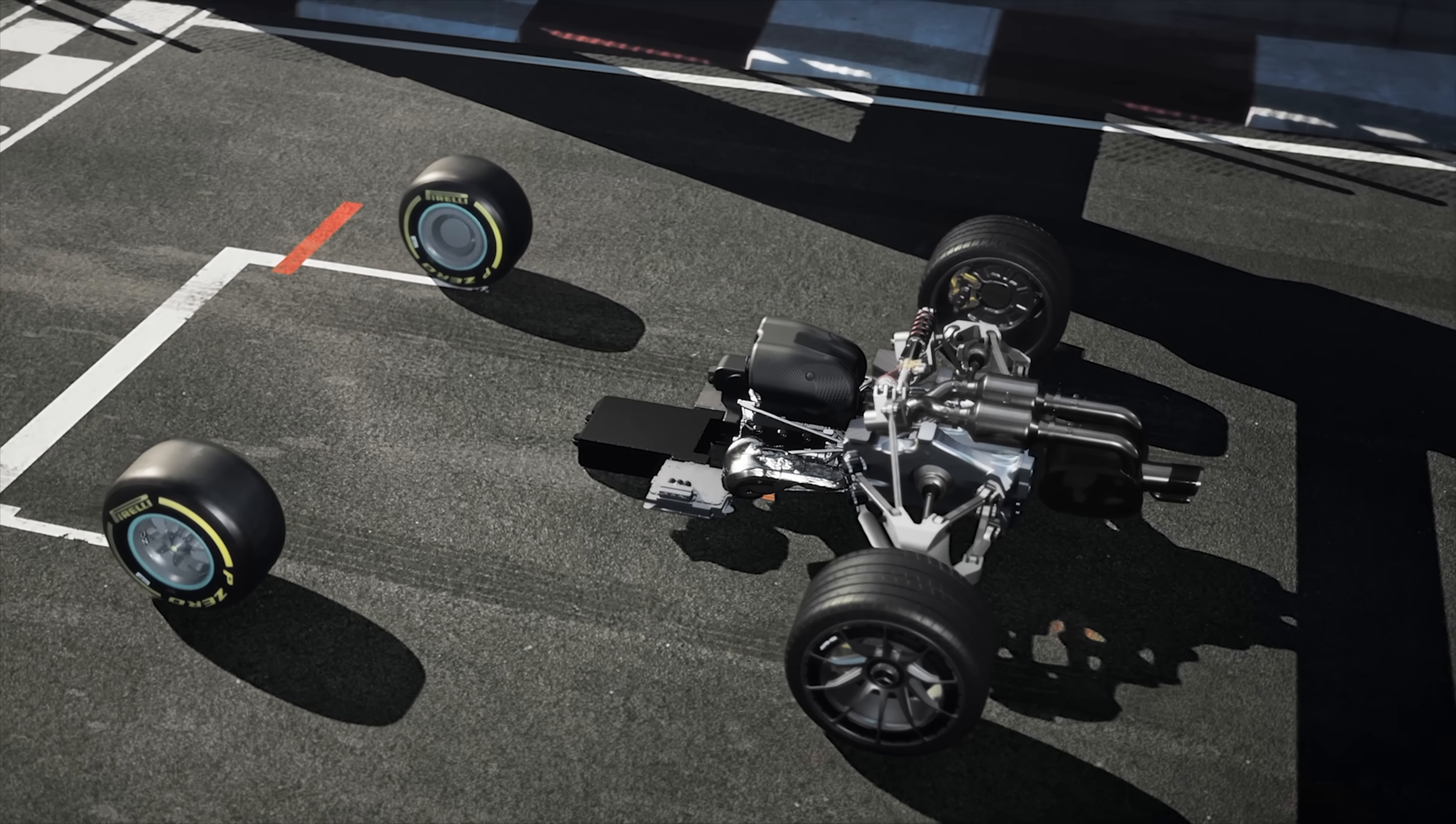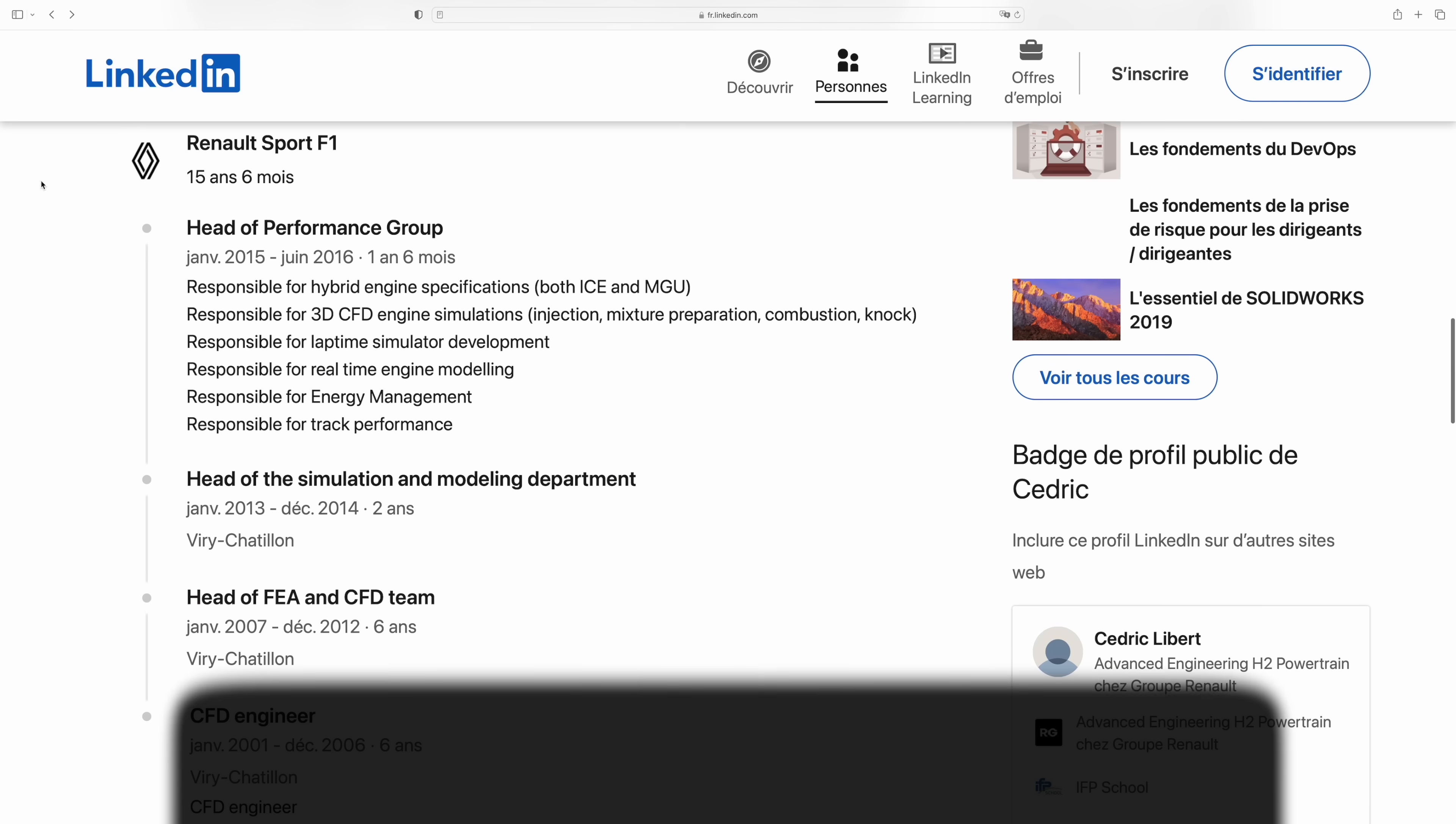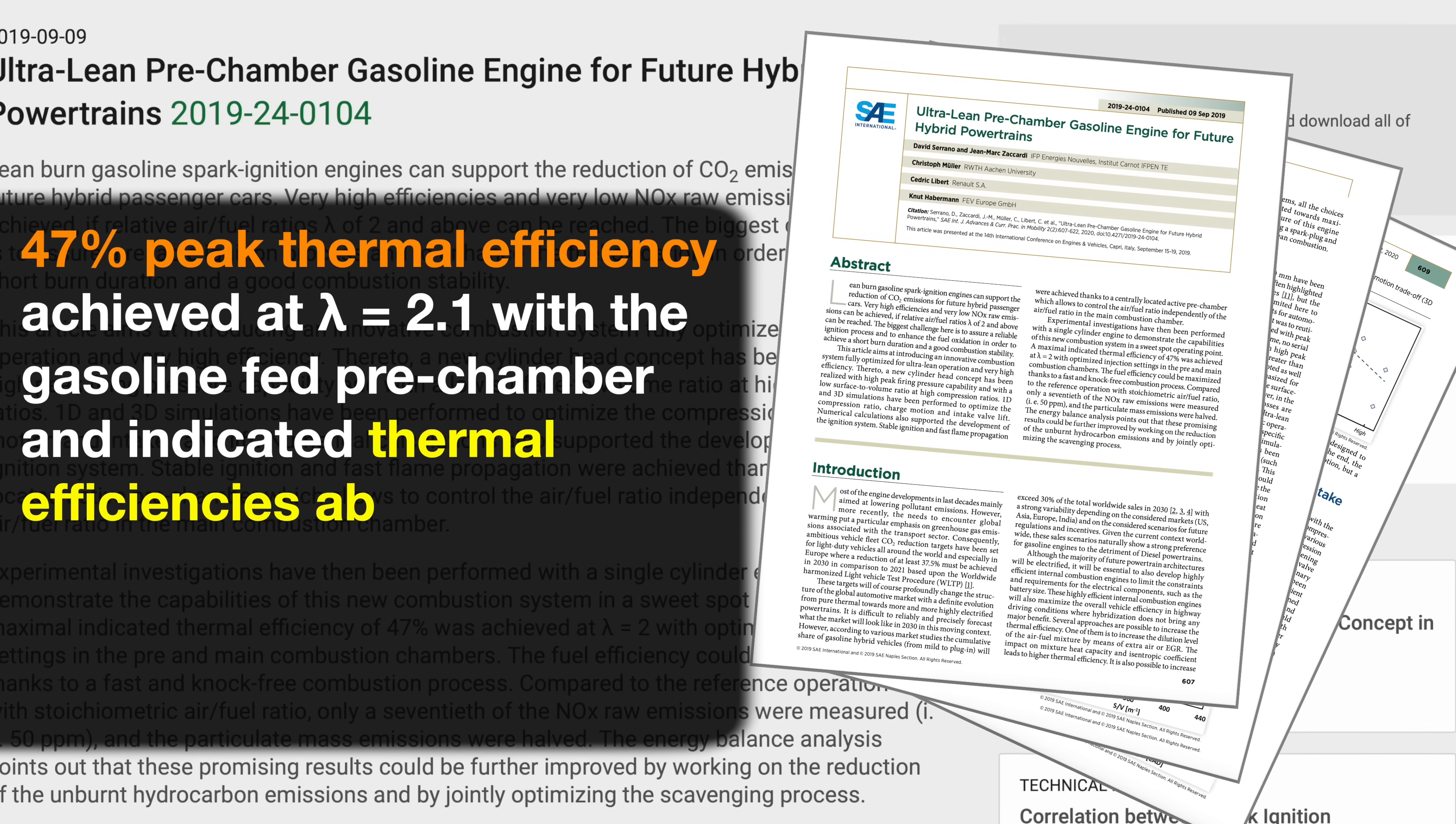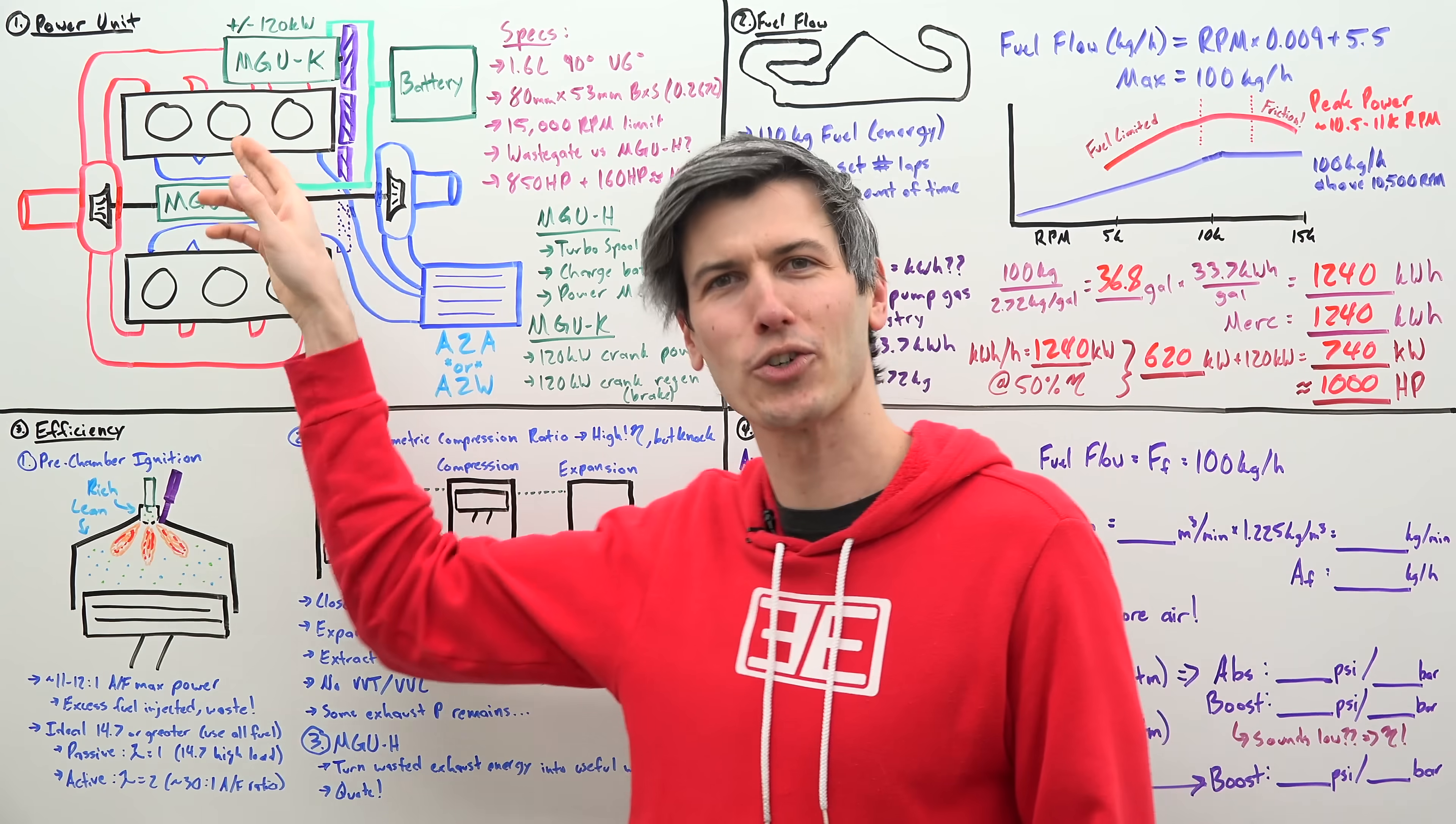Now, I wanted to find a bit more concrete evidence for efficiency claims discussed in Formula 1. And so, I came across a study on lean pre-chamber gasoline engines, which just so happened to be co-authored by a former 15-year Renault Formula 1 engineer, who, according to his LinkedIn, was responsible for hybrid engine specifications, both ICE and MGU, and responsible for 3D CFD engine simulations, injection, mixture preparation, combustion, knock. In this study, it stated 47% peak thermal efficiency achieved at lambda equals 2.1. With the gasoline-fed pre-chamber, an indicated thermal efficiencies above 48% can be expected with a realistic electrified turbocharging system.